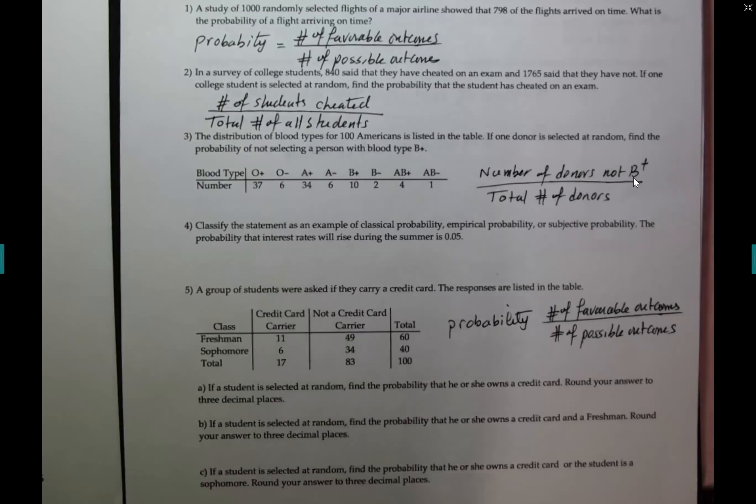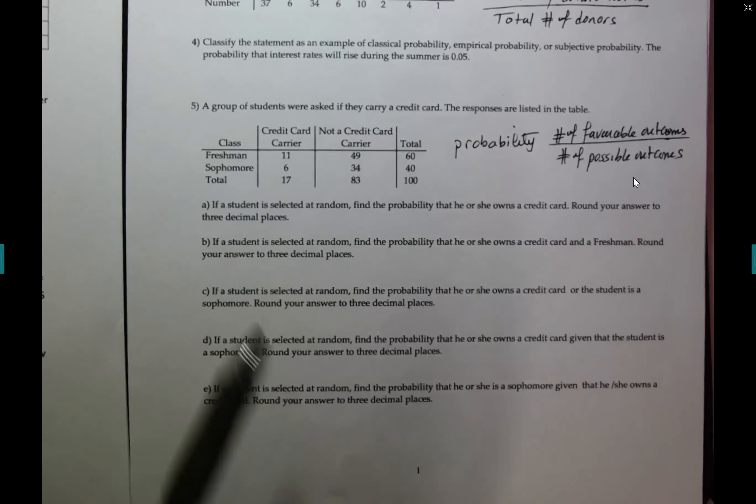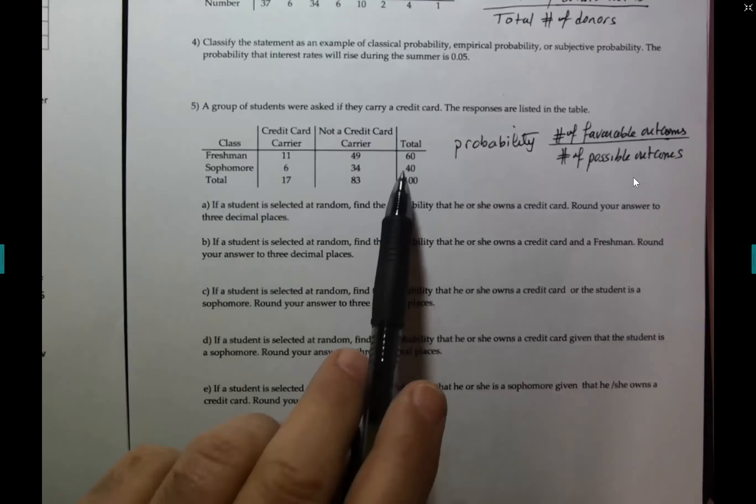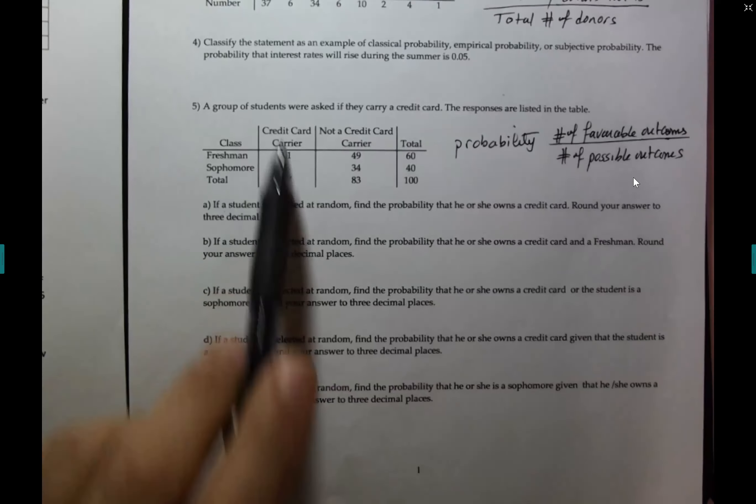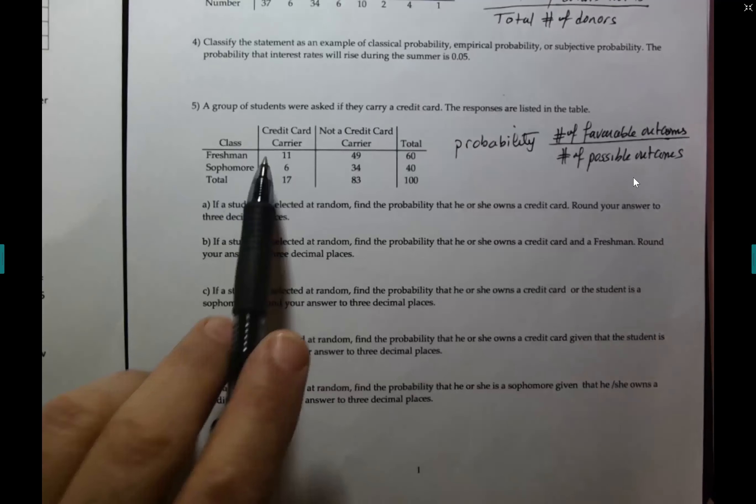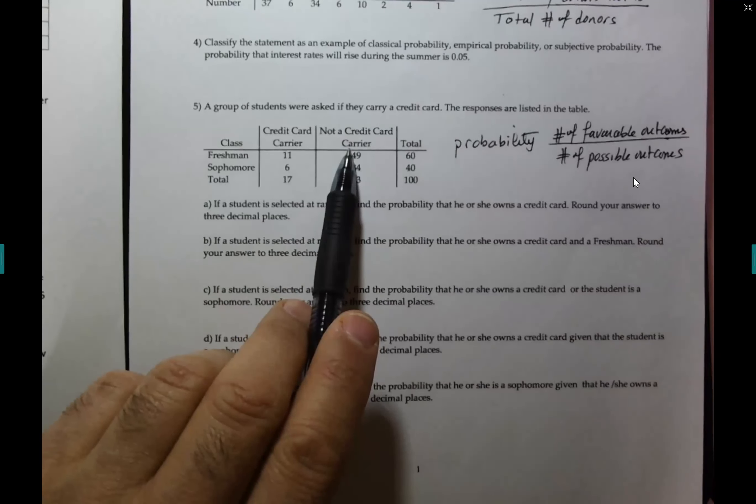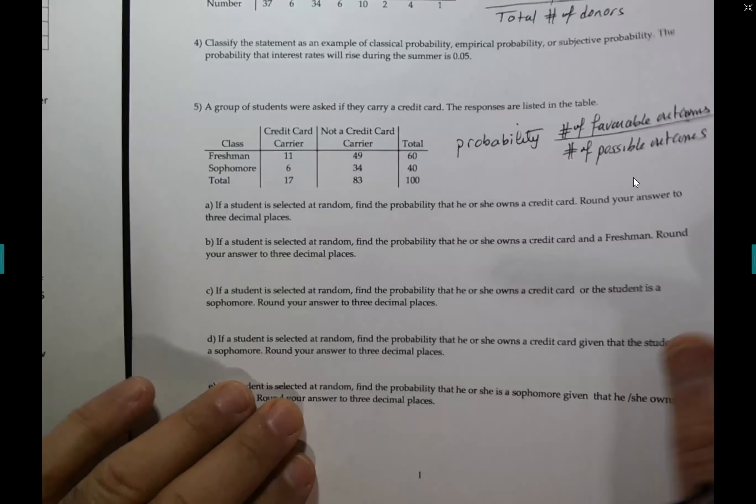Number five. A group of students were asked if they carry a credit card. The persons are listed below. One student selected at random. What's the probability that he or she owns a credit card? First of all, this is your grand total. I make it a hundred to make it easy on you. And I said round your answers to three decimal places. Own a credit card. You just look for the total of people who own a credit card. Credit card carrier means own a credit card. Not a credit card carrier means does not own a credit card. And just follow the previous question that I showed you from the Chapter 3 review.